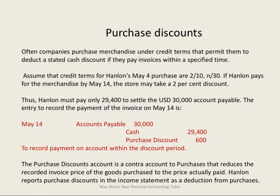As we deal with merchandise, we normally give good customers terms like 2/10, net 30 — meaning they can take a 2% discount if they pay within 10 days. For example, if Hamlin gave us terms of 2/10, net 30 and we owe them $30,000, we can pay $29,400 and cancel the $30,000 debt. This purchase discount is a credit account — a contra account to the purchases account — credited $600.